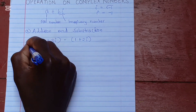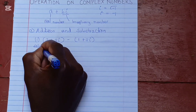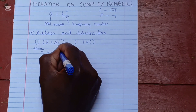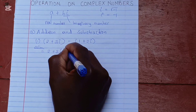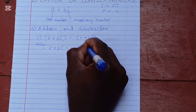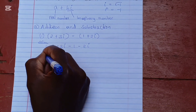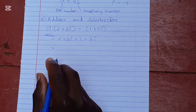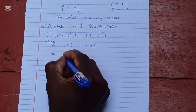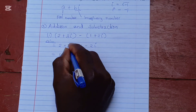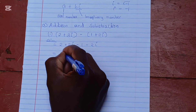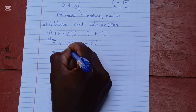The solution is: we first open the bracket, giving us 2 plus 3i, and opening the subtracted bracket gives us negative 1 minus 2i. Then we collect like terms: 2 subtract 1 gives 1, and 3i subtract 2i gives i. So the answer is 1 plus i.